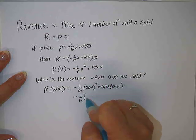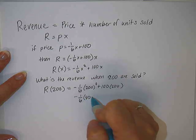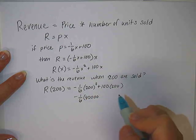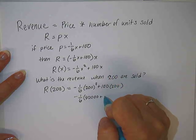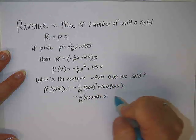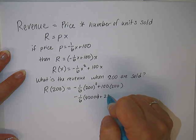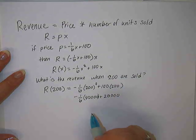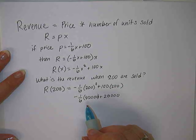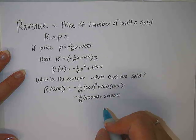And then we work it through. Negative one-over-sixth times, this would be 40,000, right? Plus, two times one is four zeros, plus 20,000.